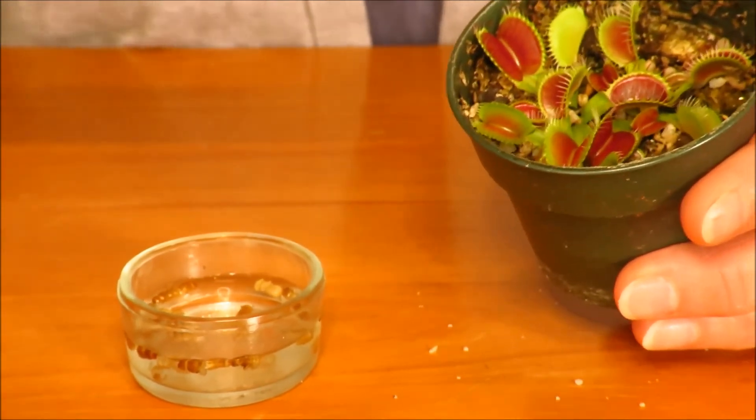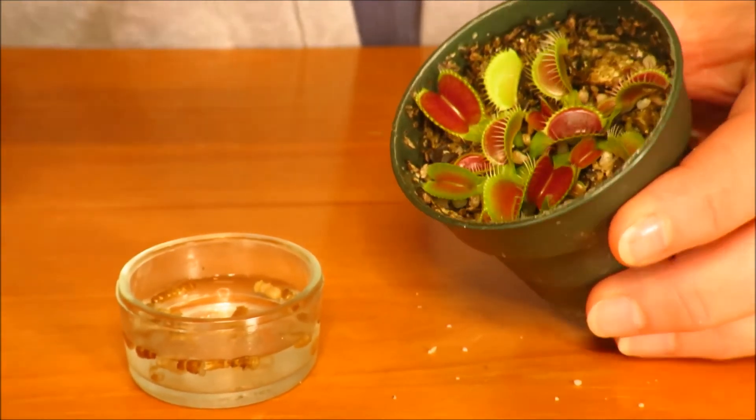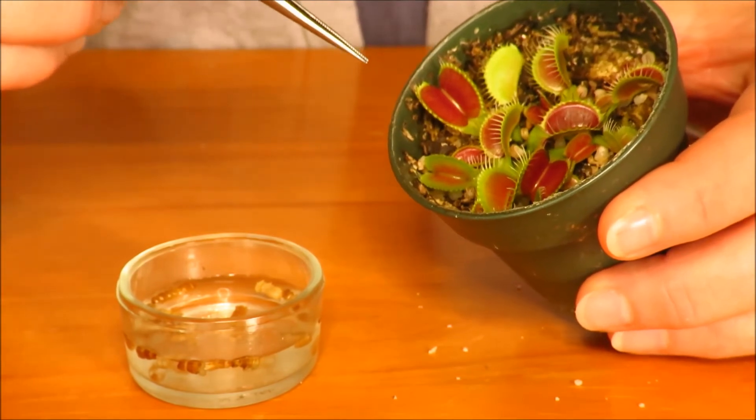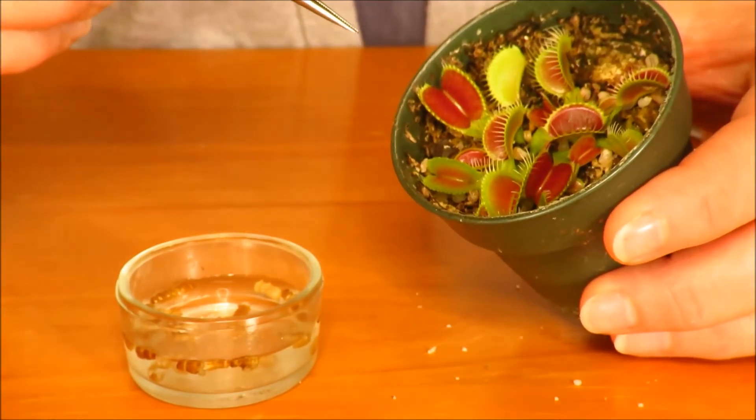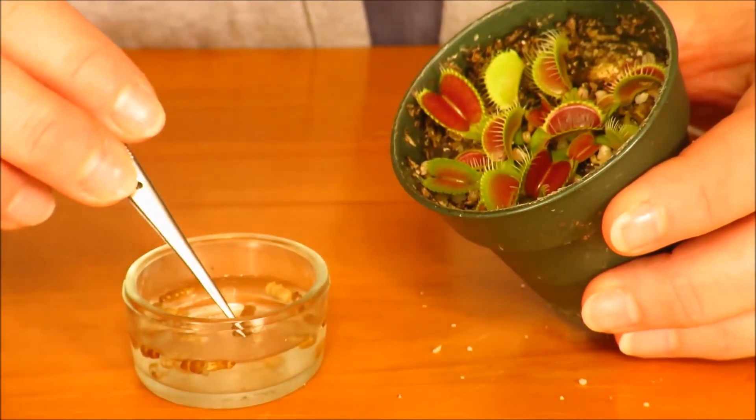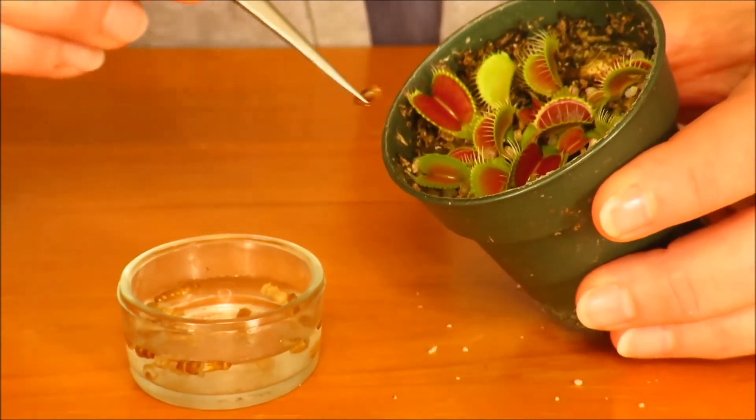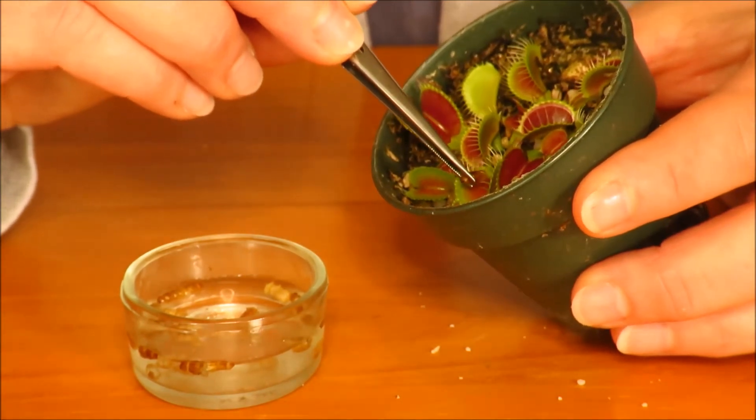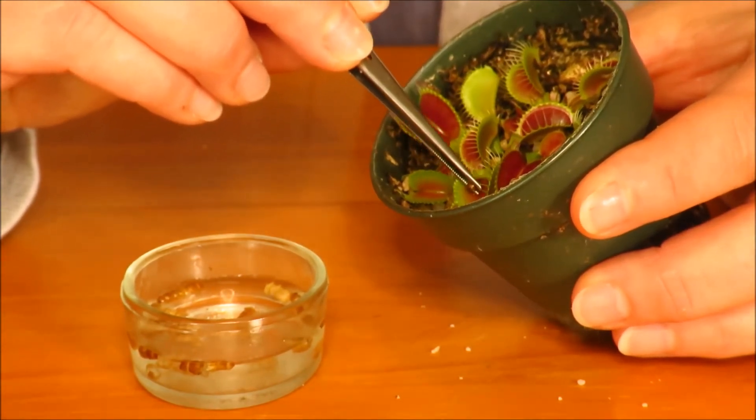So then in these traps, you have these trigger hairs. You've seen these in the video. So we have to touch those trigger hairs to actually get the trap to shut. So let's take a little piece of mealworm here and see if we can get this to work.